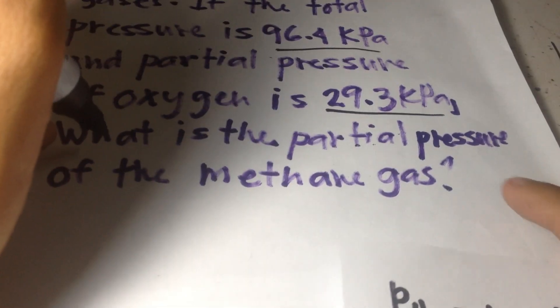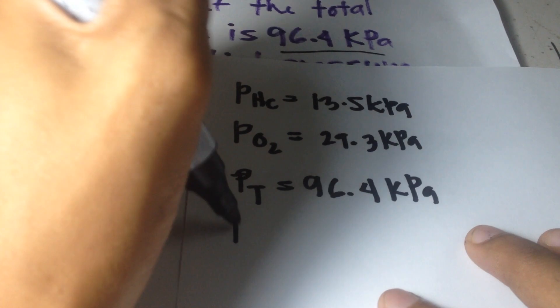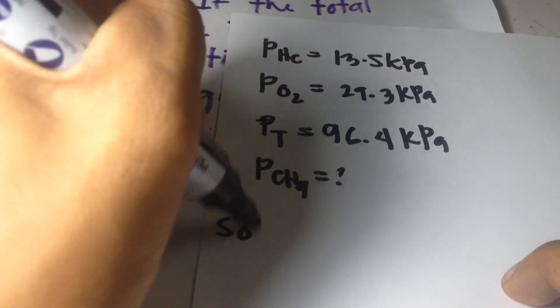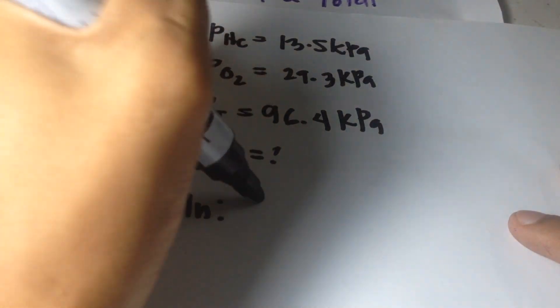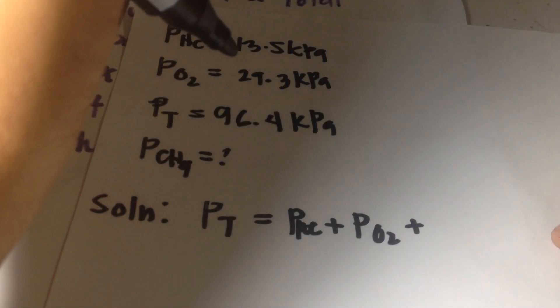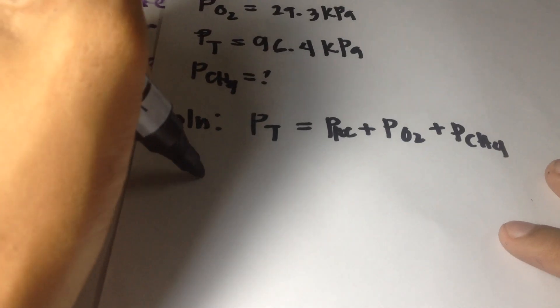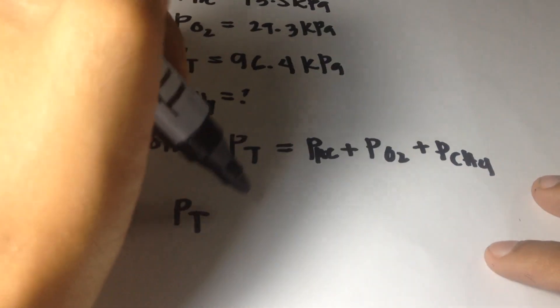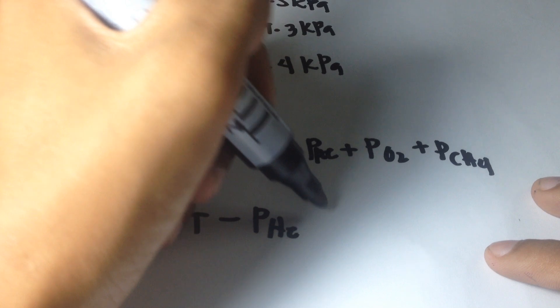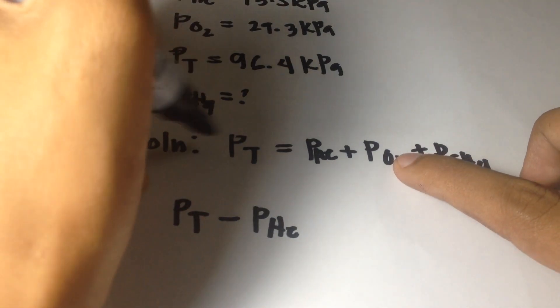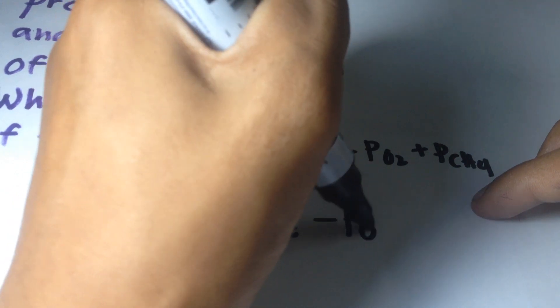The question is: what is the partial pressure of methane gas? Here is the unknown. We write the solution: P total equals P helium plus P oxygen plus P methane. We transpose to isolate P methane, so P methane equals P total minus P helium minus P oxygen.